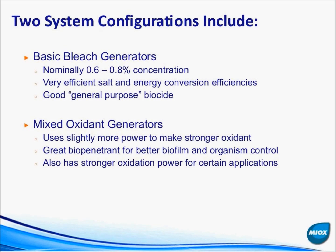We make two system configurations. The first is a basic bleach generator, which produces approximately 0.6 to 0.8 percent solution depending on the equipment. These are strictly designed to generate the maximum amount of bleach for the lowest price possible — simple sodium hypochlorite generators designed to run at maximum efficiency.